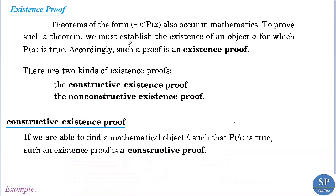Existence proof. Suppose we have a theorem of the form: there exists x, p of x. To prove such a theorem we have to find or establish the existence of an object a for which p of a is true.